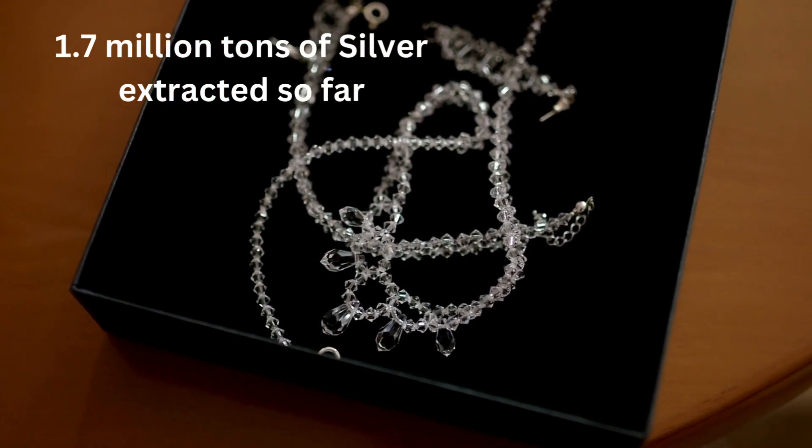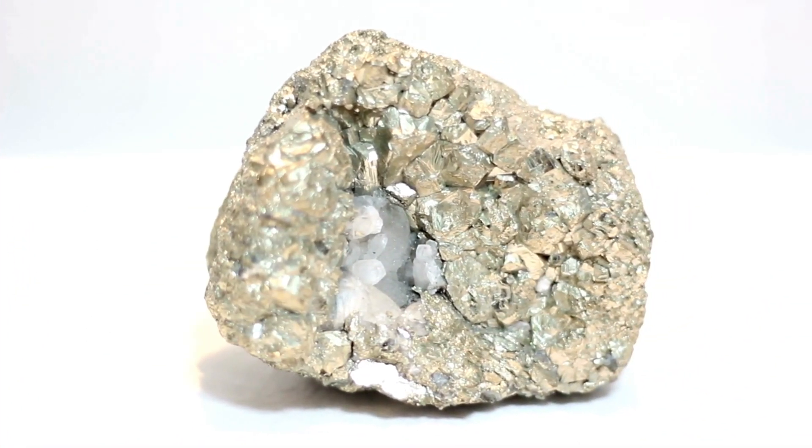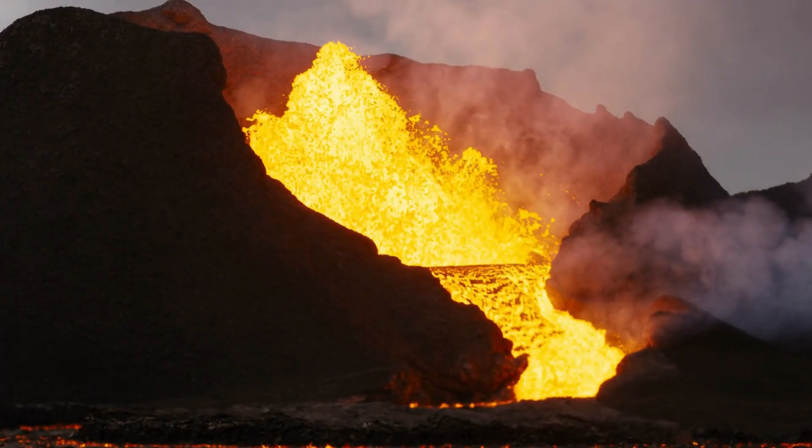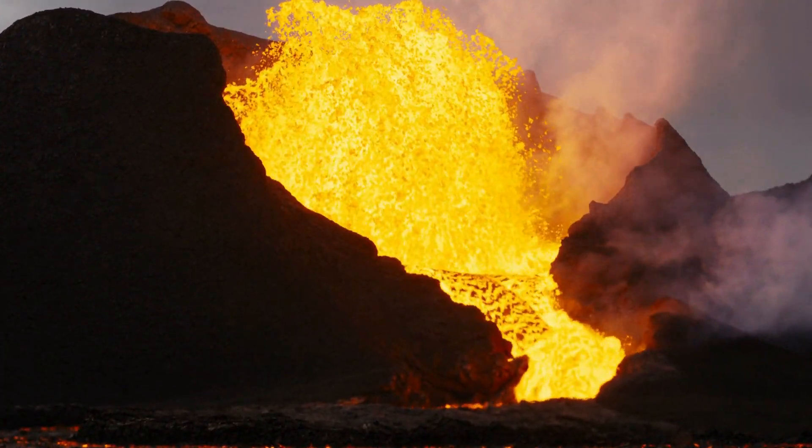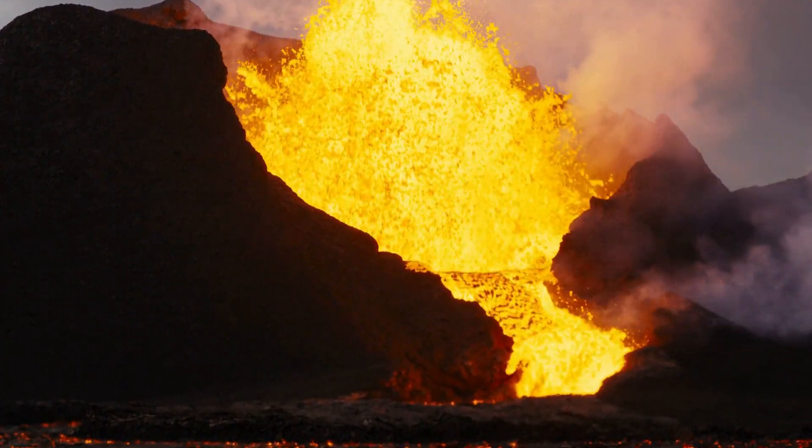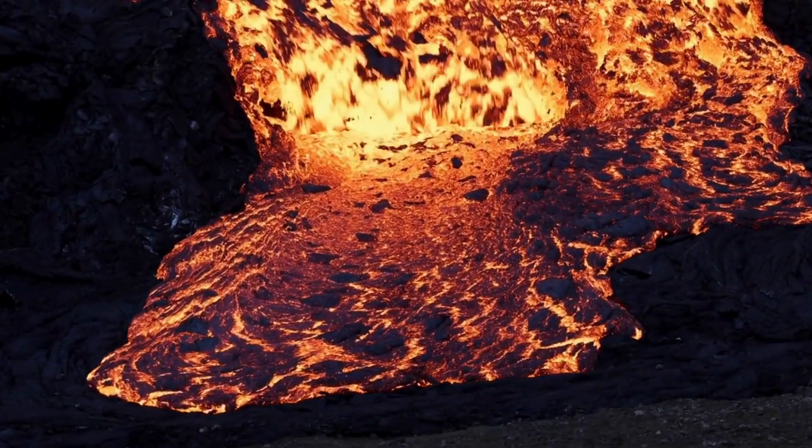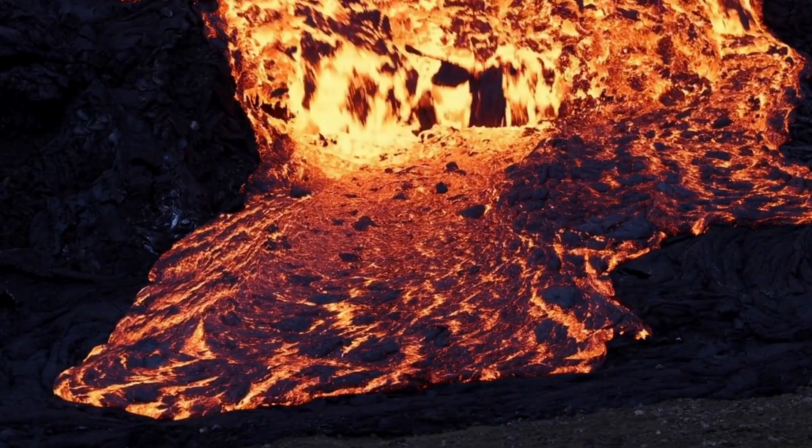Gold and silver are often concentrated in certain areas of the Earth's crust through processes like fractional crystallization in magma and hydrothermal activities, where hot, mineral-rich water moves through rock formations. These processes are not as widespread, leading to limited deposits of these precious metals.